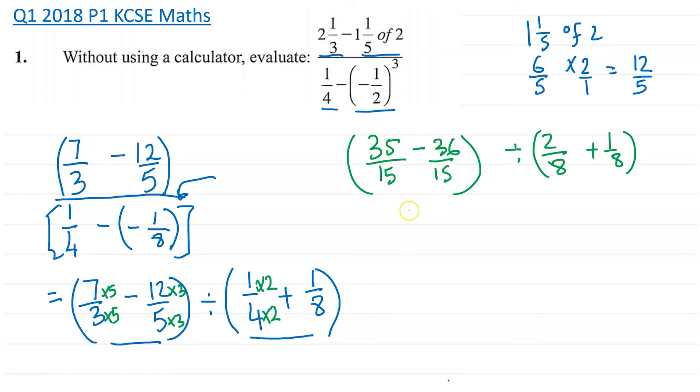And now let's simplify what we have. 35 take away 36, that's going to be negative 1 over 15. And then this, divide by 2 plus 1 is 3, so this side is now 3 over 8. Now we have a division there, so that means we need to put multiplication.